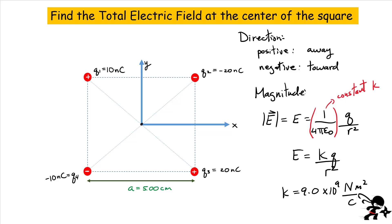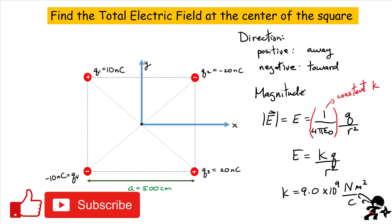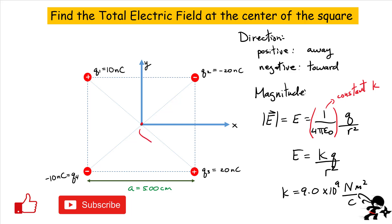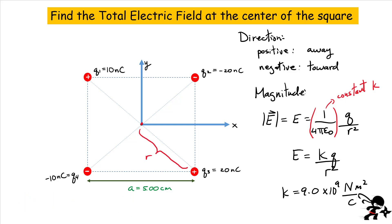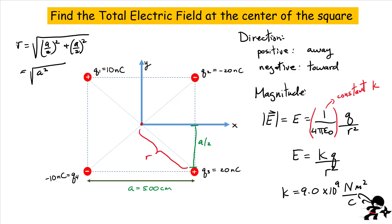All of that constant you can group together and call it K, which simplifies the expression for the magnitude to K Q divided by R squared. The value of this constant K is approximately 9 times 10 to the 9, in units of newton meters squared per coulomb squared. Now, what about the value R? All of these charges are going to be the same distance from the center. This is the value R that appears in the denominator for all of these values.